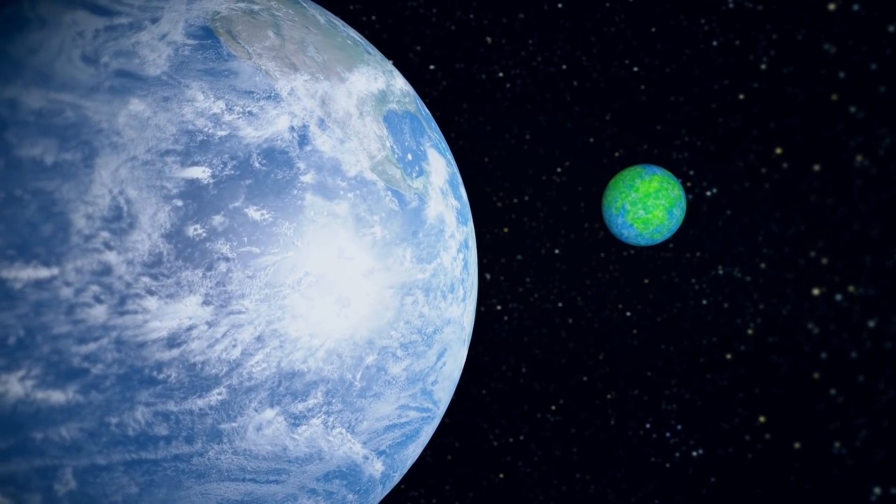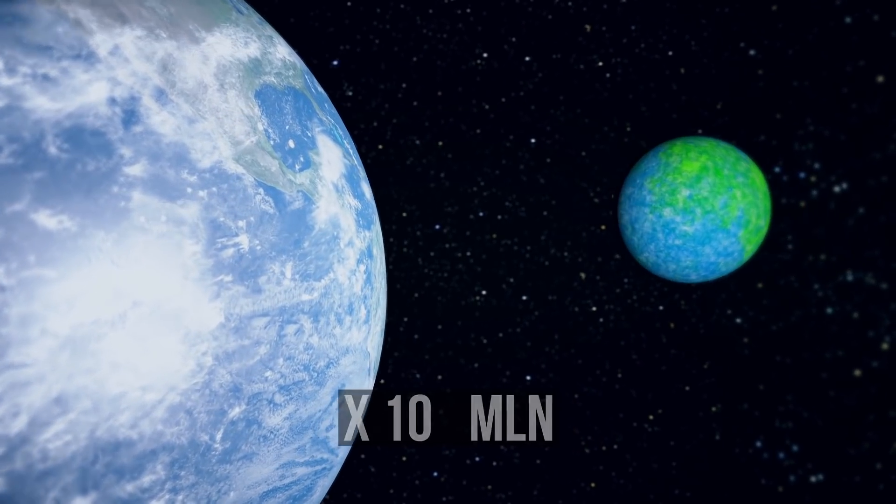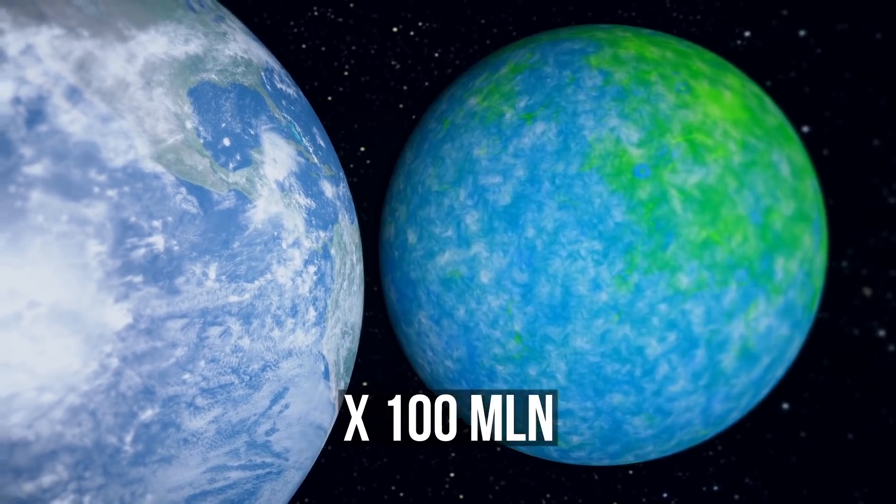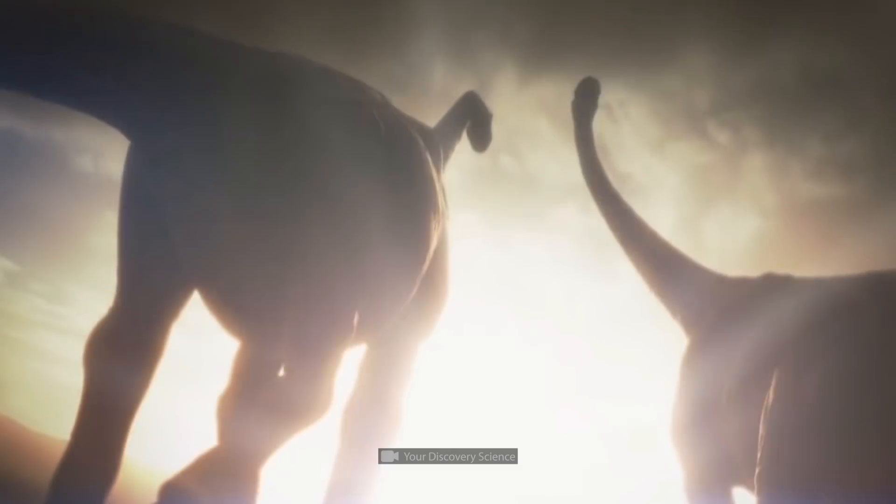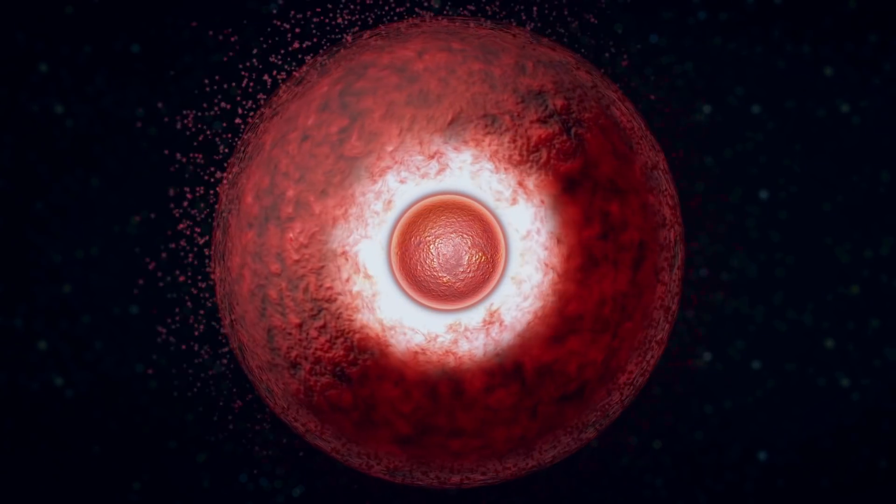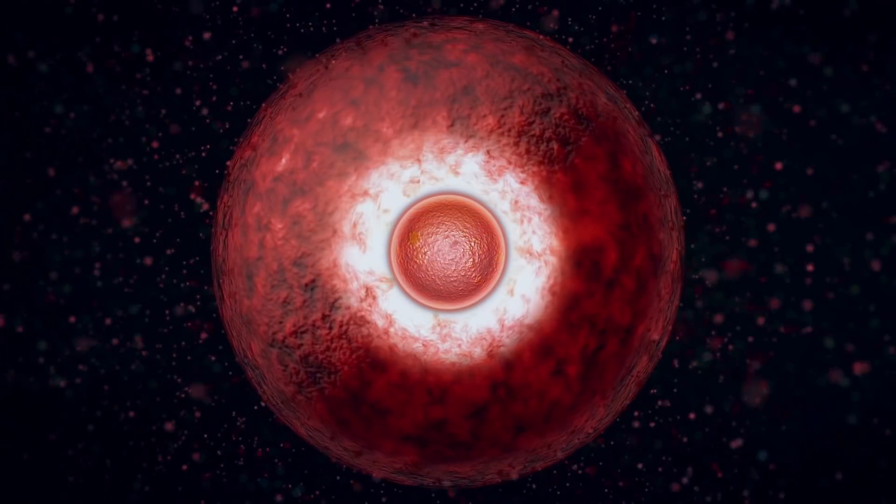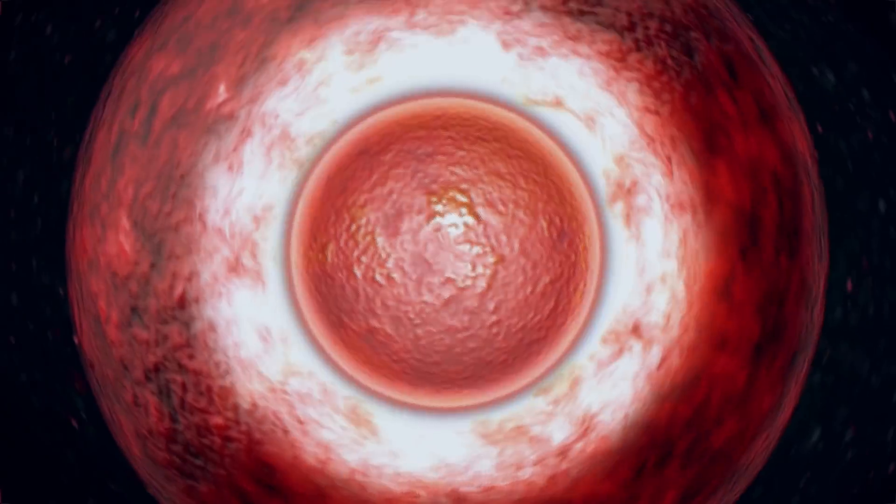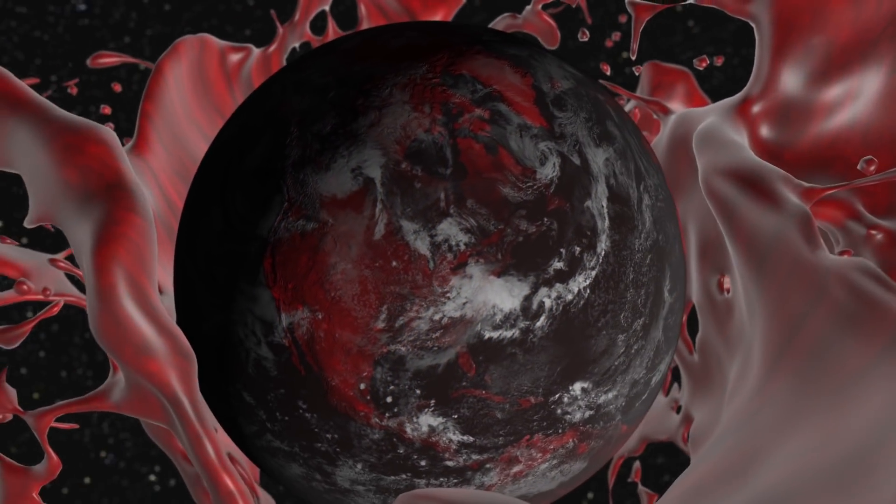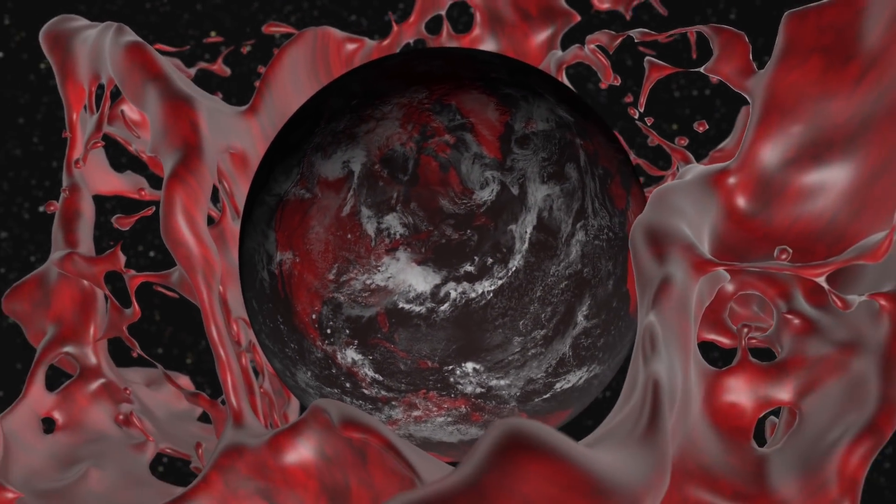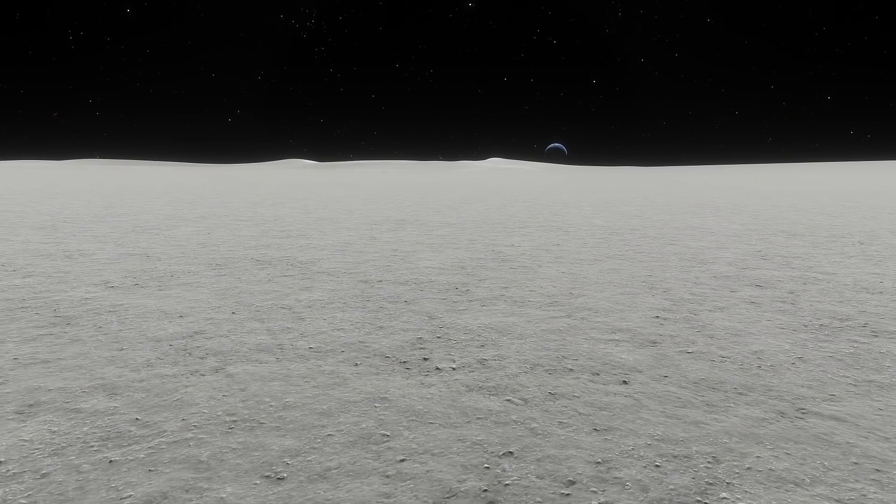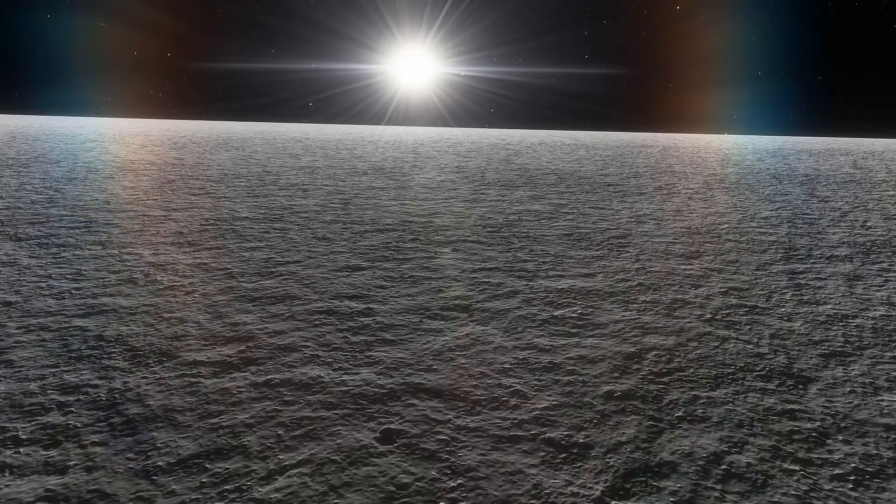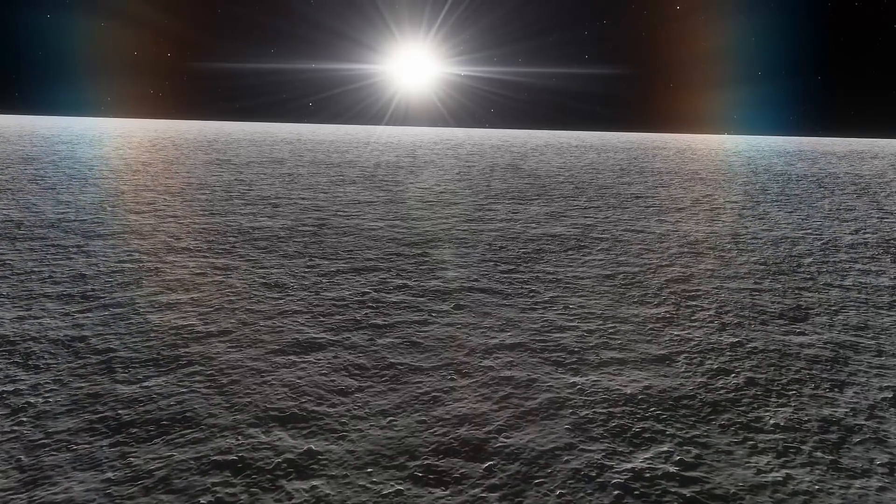It's believed that the moment Theia hit the Earth, about 100 million times more energy was released than when the dinosaurs became extinct. Some of the outer layers of the Earth evaporated, and both celestial bodies melted, and part of the mantle was thrown into orbit around the Earth. This hypothesis explains why the moon has an unusual composition and has no metallic materials.